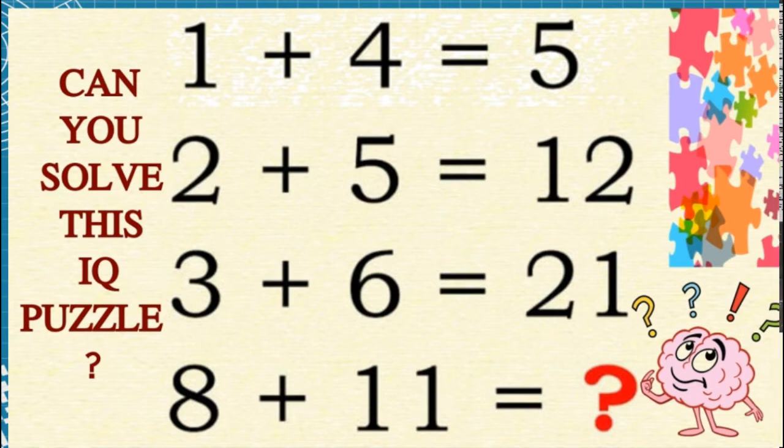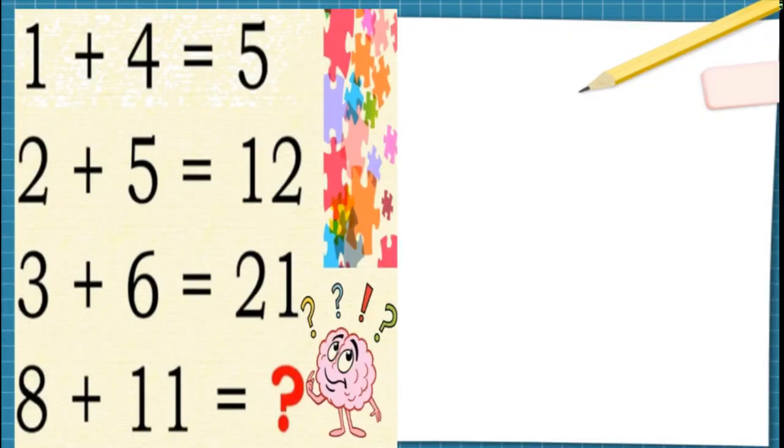Let's start with the solution for this puzzle. Let's take the first equation. 1 plus 4 is equal to 5. Okay, it's definitely 5. 1 plus 4 is equal to 5.